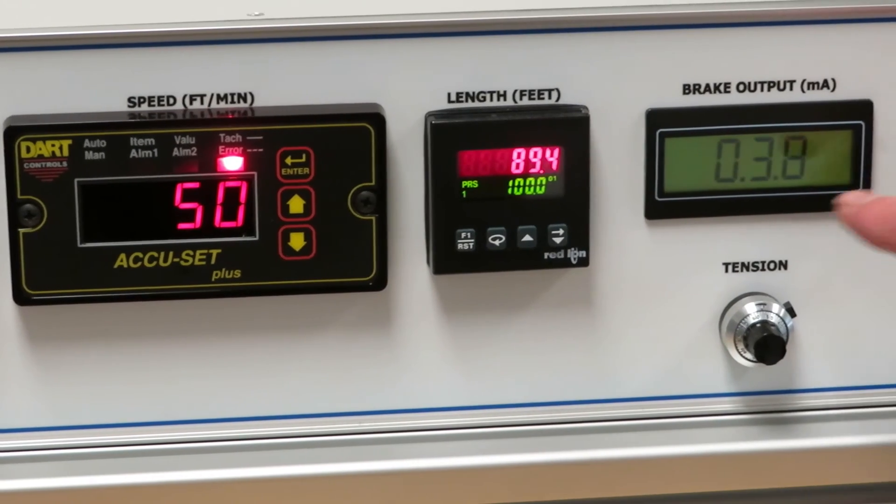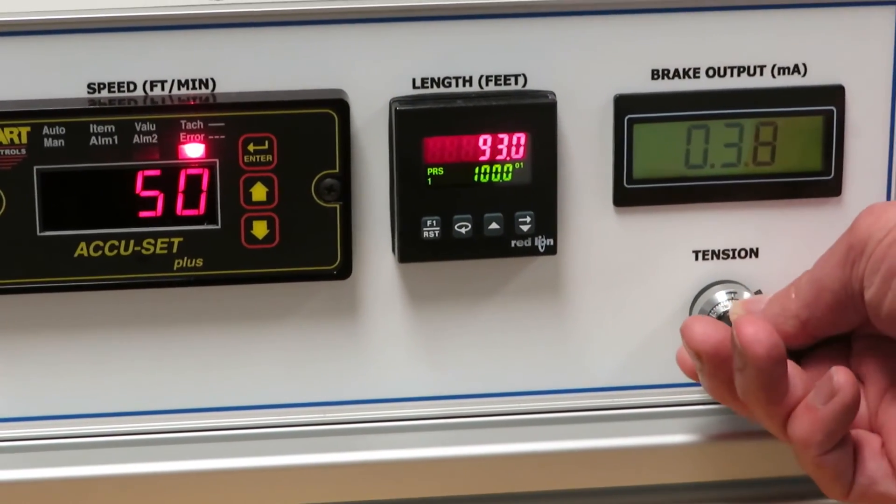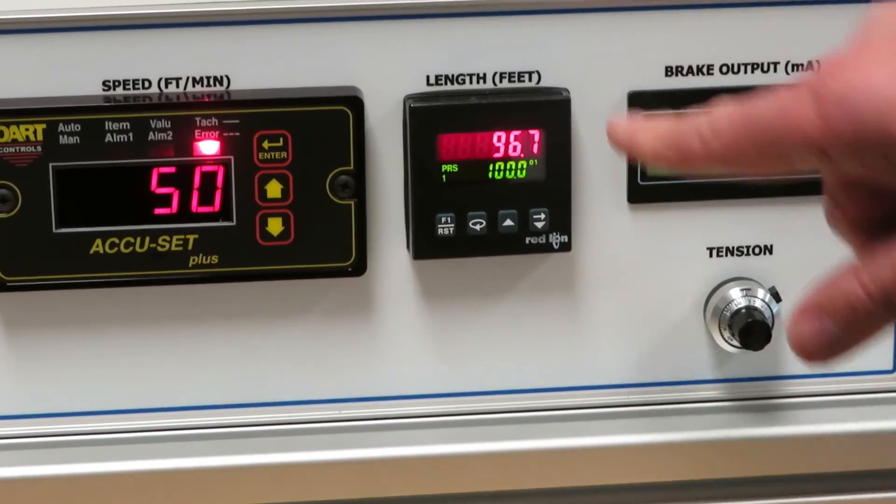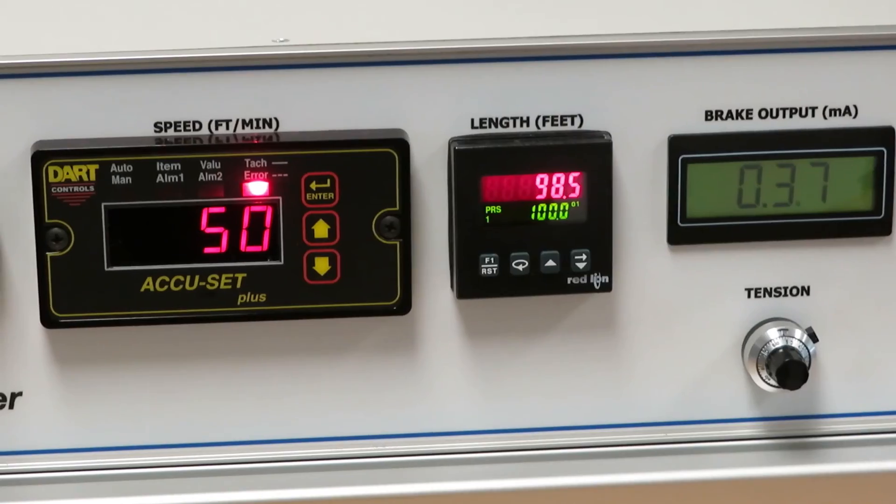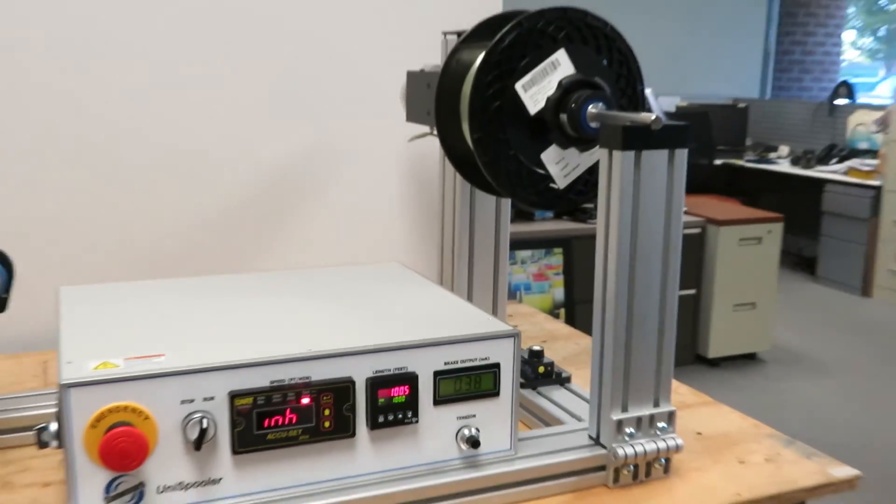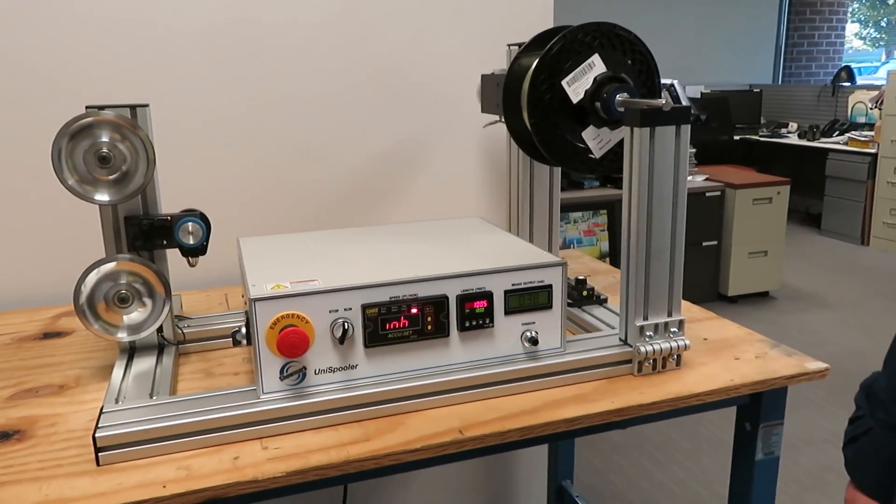These two controls here are the indicator for the brake on the payoff. And here I can raise or lower that brake setting. If I hear we're about to hit 100 feet, you'll see it stop. So that's it. Thank you very much.